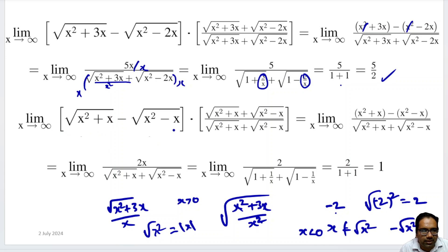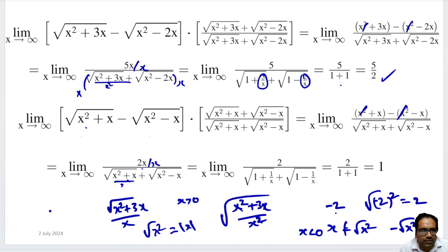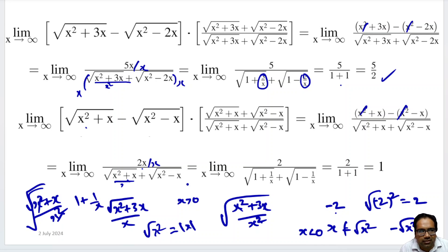Similarly, in the second case — square root of x squared plus x minus square root of x squared minus x — we take the conjugate and multiply both numerator and denominator. We get a squared minus b squared in the numerator: x squared plus x minus (x squared minus x). The x squared terms cancel, leaving 2x. We again divide both numerator and denominator by x. In the denominator, taking x squared inside the roots gives square root of 1 plus 1 over x plus square root of 1 minus 1 over x. As x tends to infinity, 1 over x tends to 0, so we get 2 over (1 plus 1), which equals 2 over 2, which equals 1.